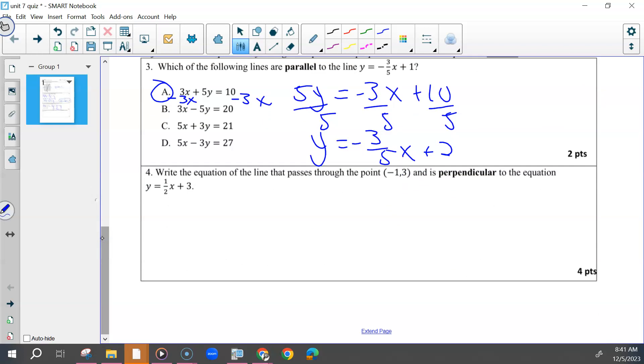And then number four, you have to first change the slope. Either you write that off to the side or you put that in your equation. And then use y minus 3 equals negative 2 times x minus negative 1, and then change to a plus or just put a plus. And then distribute and solve.